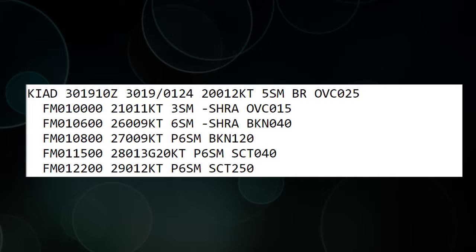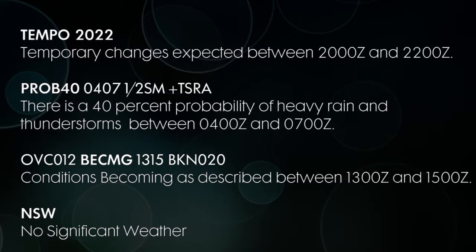There are some different codes you might see in this forecast. One of those is TEMPO, which stands for a temporary condition, and it gives you a four-digit code for the time period. So temporarily between 20 and 22 Zulu, for example, a certain condition will occur.